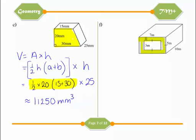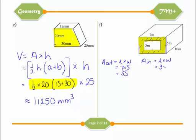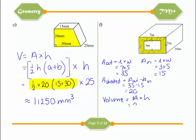Next we have a shaded cross-section. We need to subtract the inner prism from the outer prism — or alternatively work out the area of the shaded section first and then multiply by 10. The area of the outside rectangle is 7 times 5, which is 35. The area of the inside rectangle is 3 times 5, which is 15. So the shaded area is 35 minus 15, which is 20. Volume is 20 times 10, giving 200 metres cubed.